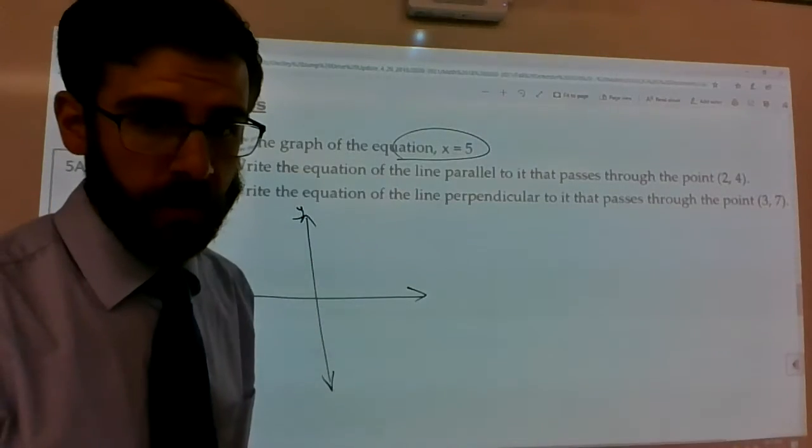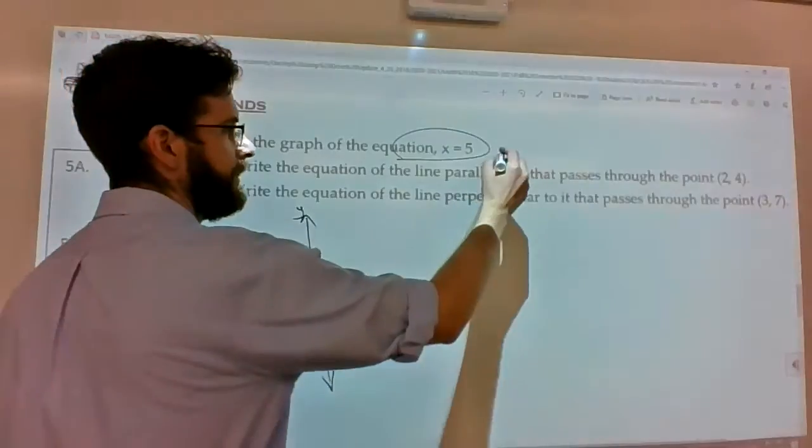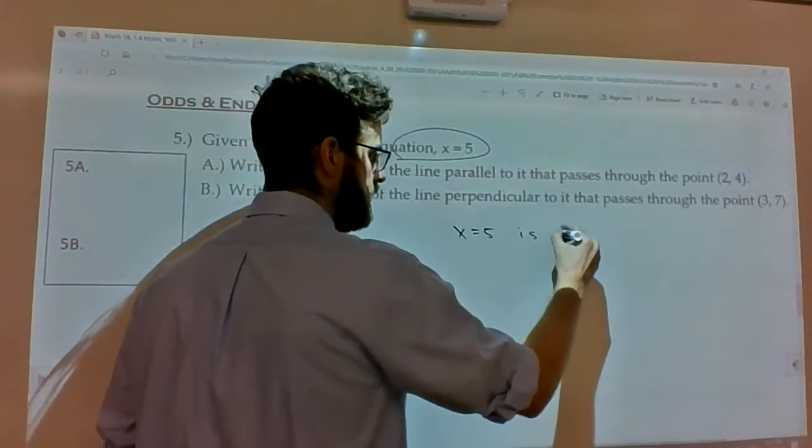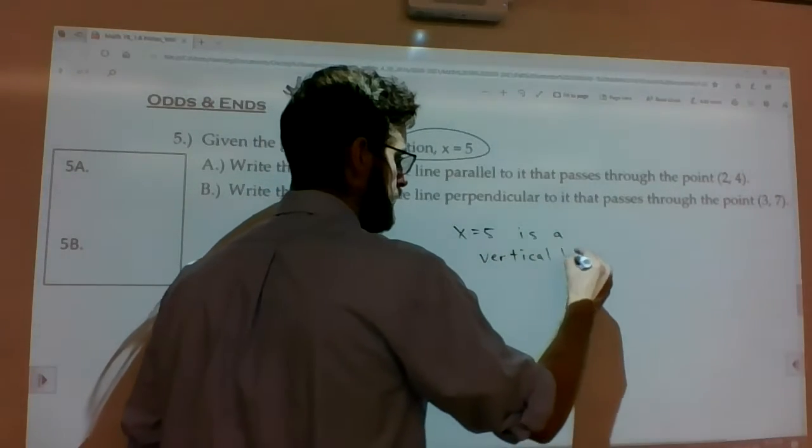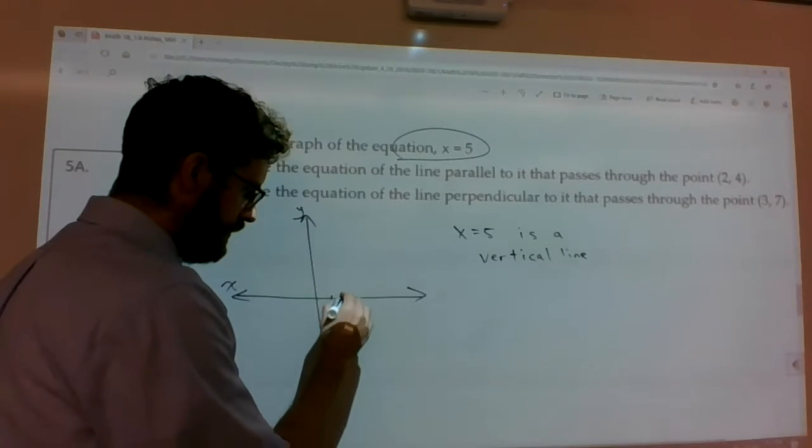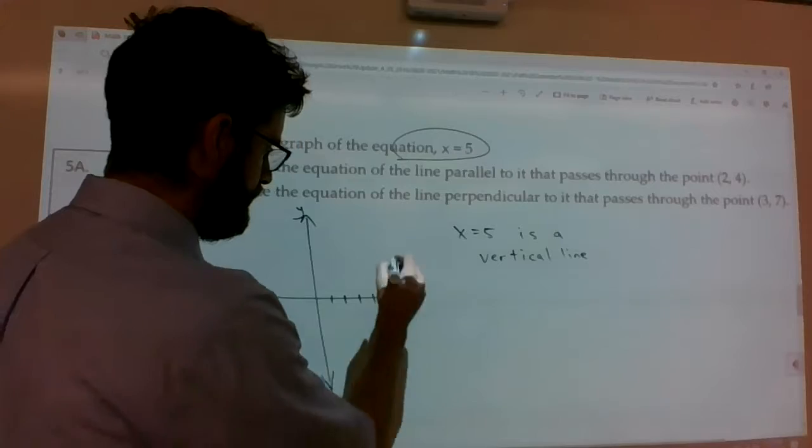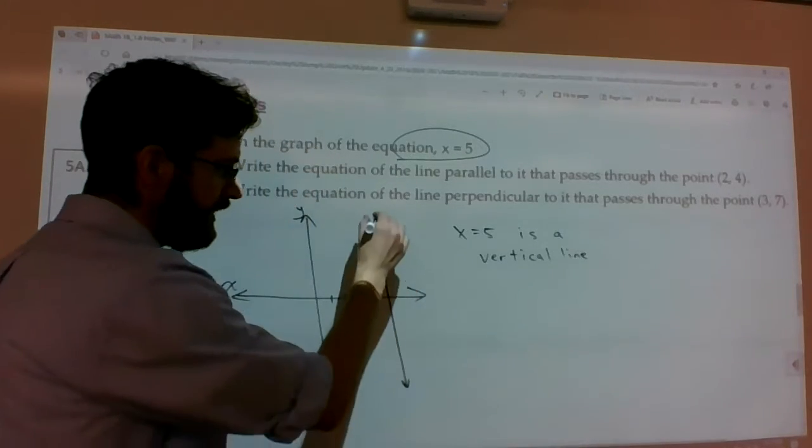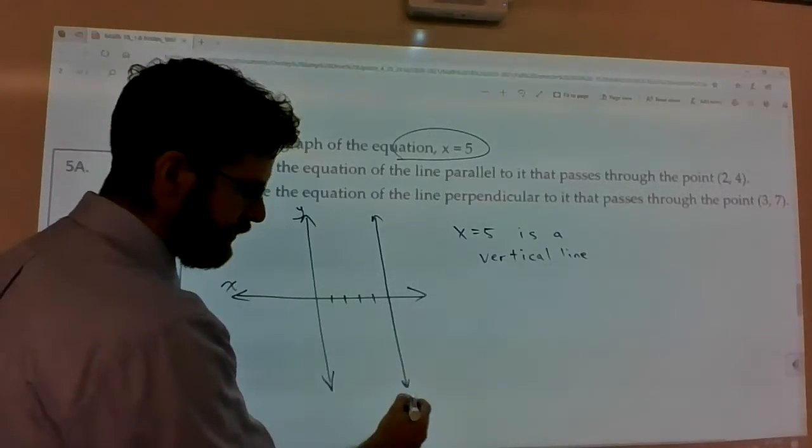So if you recall, x equals 5 is a vertical line. Write 5 units and then draw it pretty much parallel to the y-axis. So this is the line x equals 5.